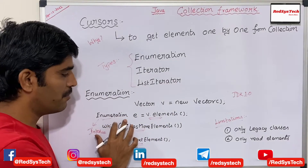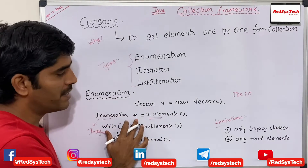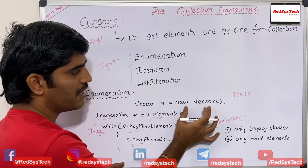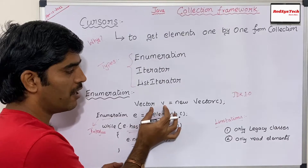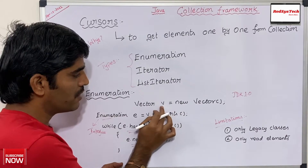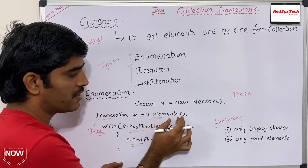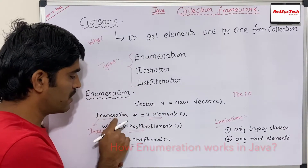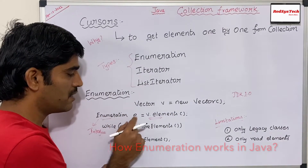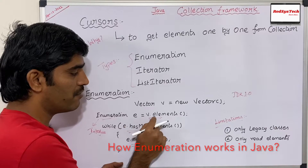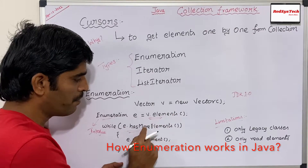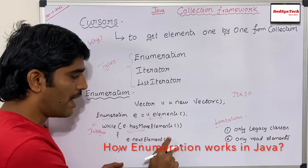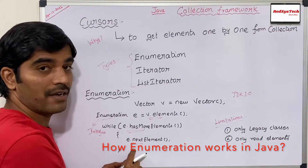So how can we get the enumeration object? If I have a Vector, I write: Vector v = new Vector(). This is how we create an object for the Vector class. Then using this vector v, if I say v.elements(), this is going to return the enumeration object. Enumeration is an interface and we get the reference with the help of v.elements(). With that enumeration object e, we have a couple of methods we can use to iterate inside the collection.